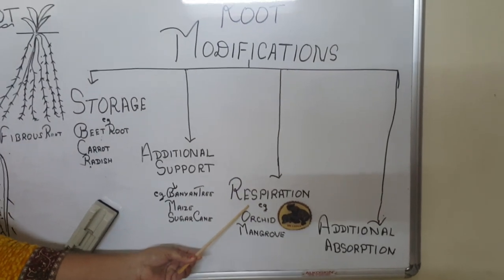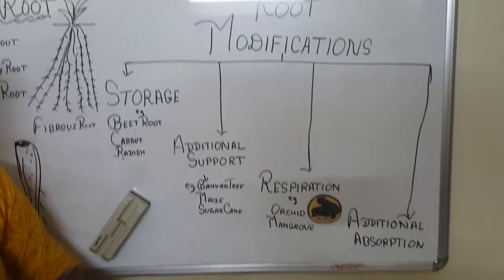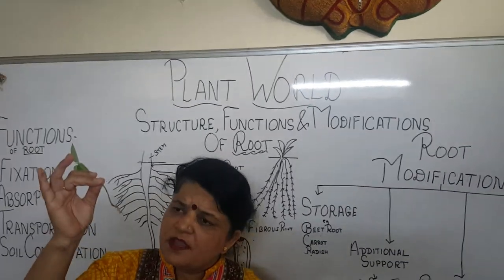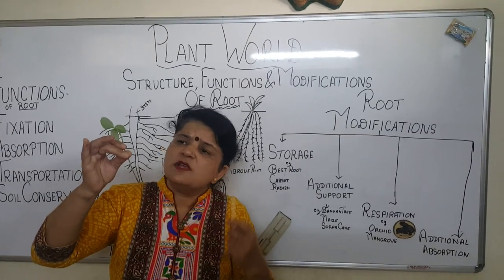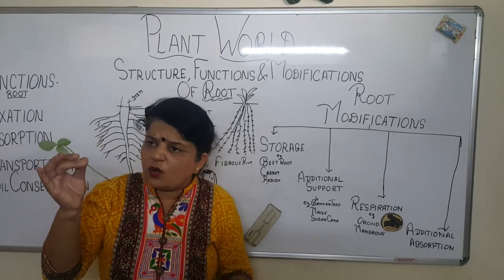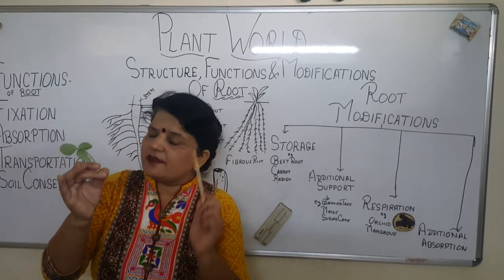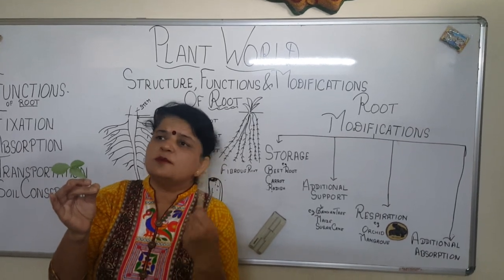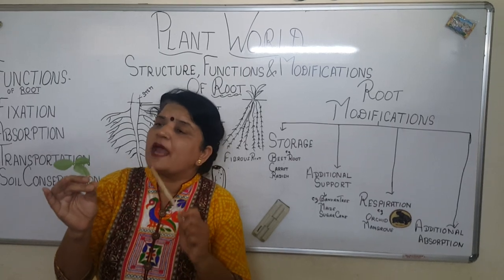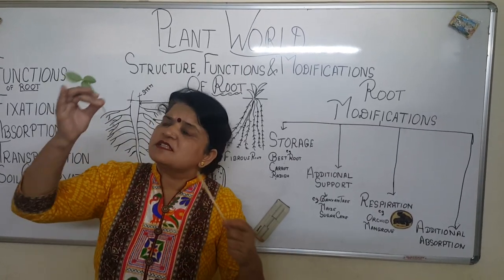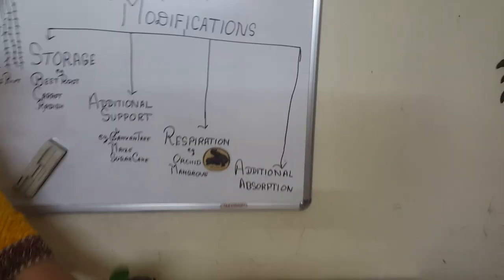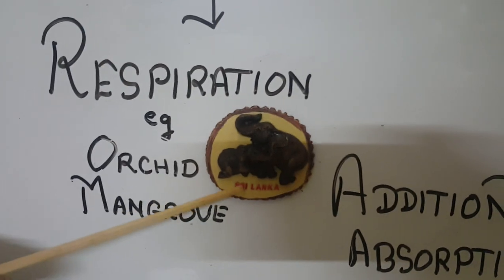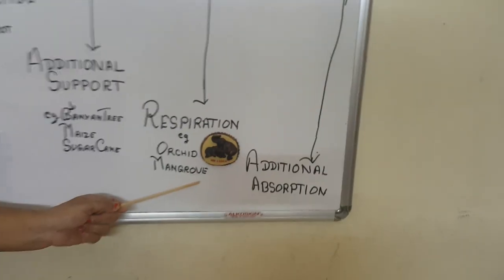Roots also help in respiration. When you see orchids, imagine the roots hanging in air — how will they get water if they are not in soil at all? There is a lot of moisture in our air, so these roots absorb moisture from the air and the plant survives. These are found in epiphytes — roots hanging in the air. You will find this kind of root in orchids; if you ever visit Sri Lanka, don't miss the orchid garden.